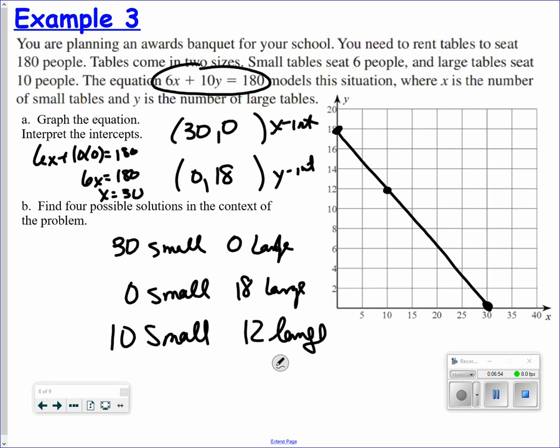I have another point right here that might work. 20 small tables and 6 large tables would accommodate my 180 people. So, again, there are scenarios within this that also would lend to other situations that would accommodate all 180 people.